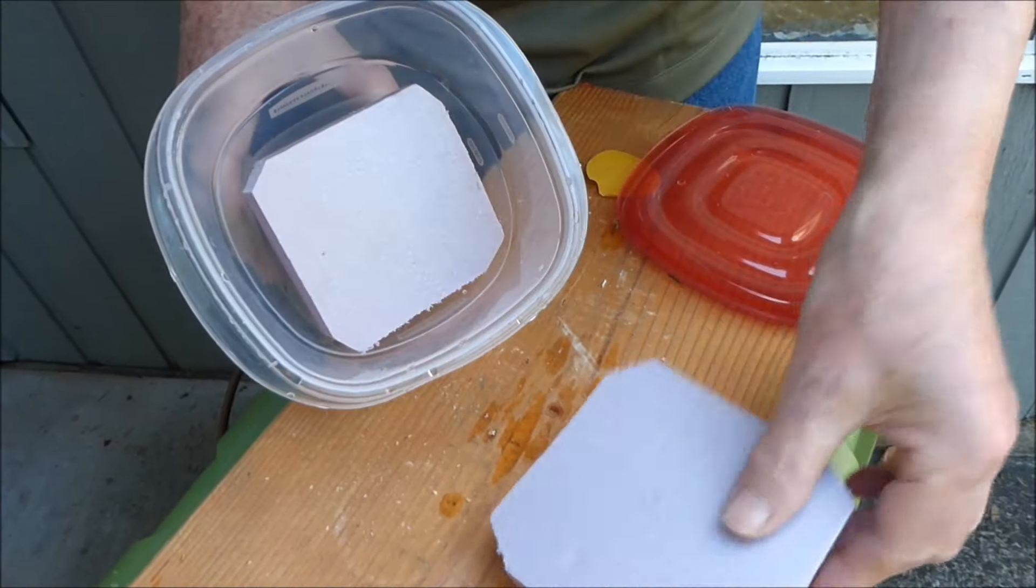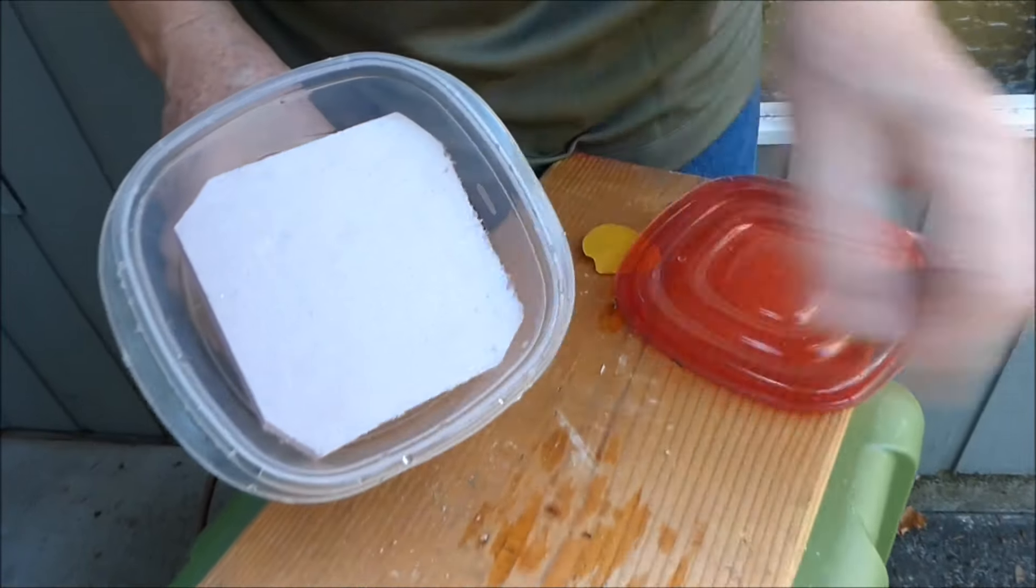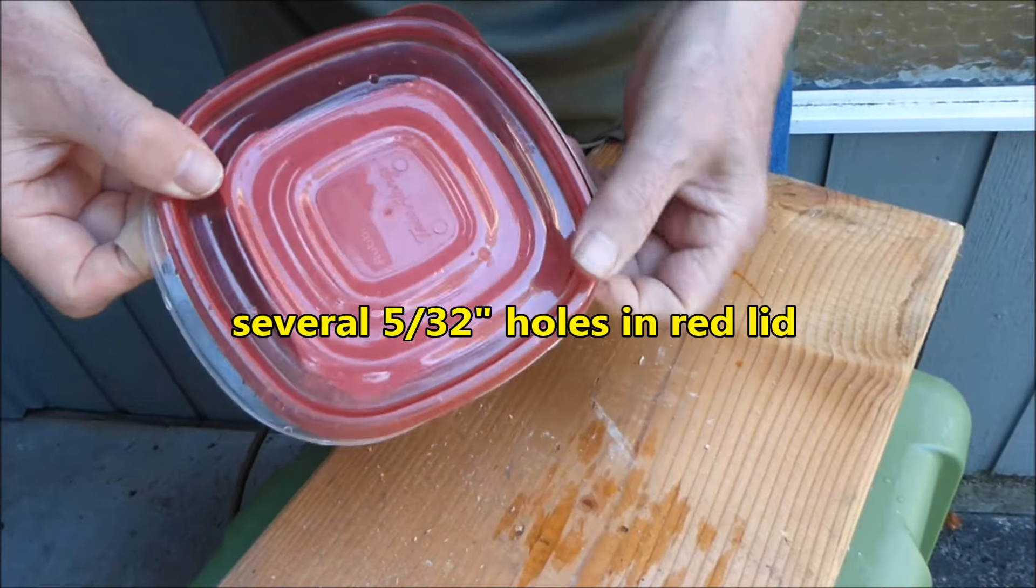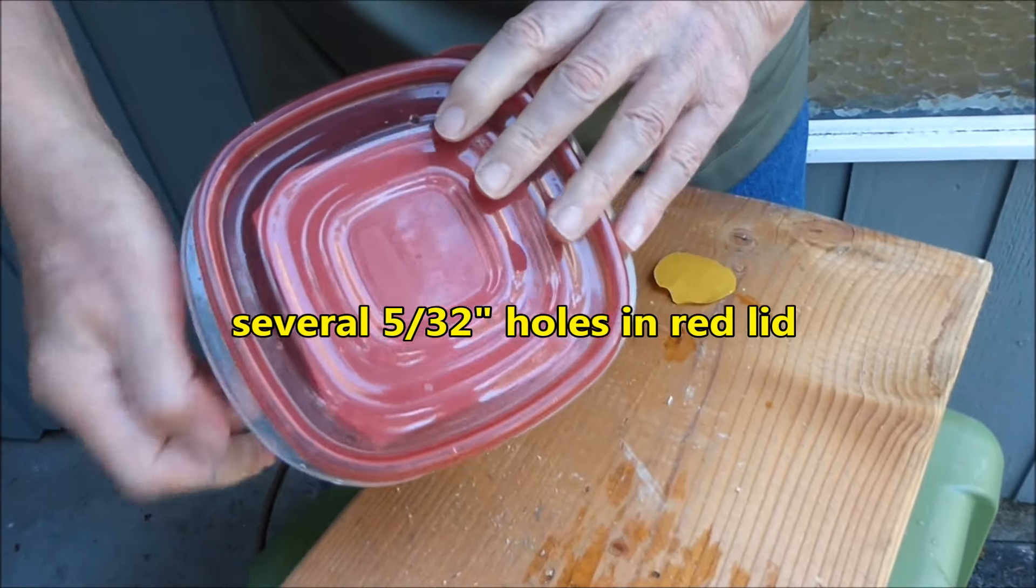Drill several 1 eighth inch or larger drain holes in the lid of the container. Place the extruded polystyrene into the container and snap the lid on the container.